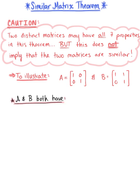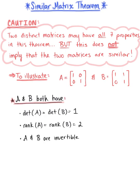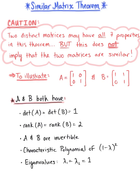Now matrix A and matrix B both have a determinant of 1, they have a rank of 2, they're both invertible, they have a characteristic polynomial of (1 minus lambda) squared, and they both have eigenvalues lambda sub 1 equals lambda sub 2 equals 1.